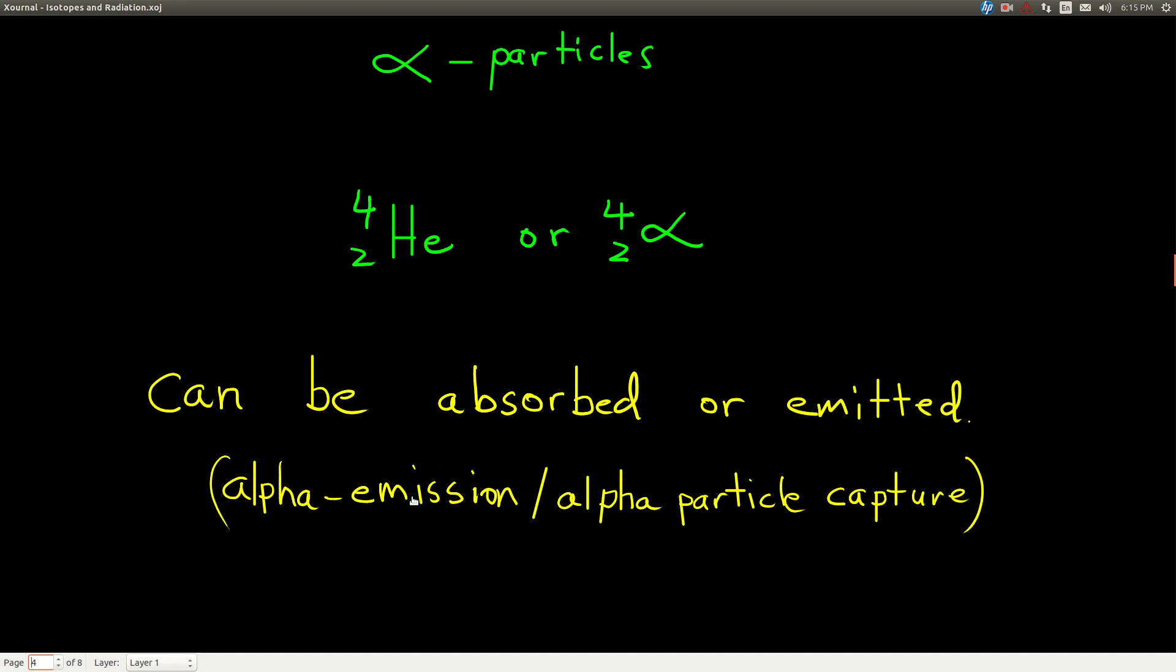So starting with alpha particles. An alpha particle is a helium-4 nucleus. Remember, helium-4 means that it's one of the isotopes of helium. The 4 means there are 4 protons and neutrons - because it's helium, there are 2 protons, so that means there are 2 neutrons. Now this is without the electrons, just a nucleus. The symbol for an alpha particle is either like helium with a 4 and a 2, or it's an alpha with a 4 and a 2. Either one, you'll see both. And alpha particles can be absorbed (alpha capture) or emitted (alpha emission).